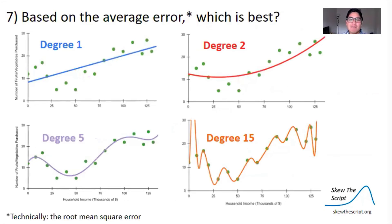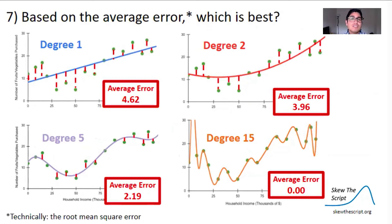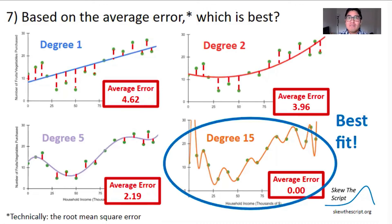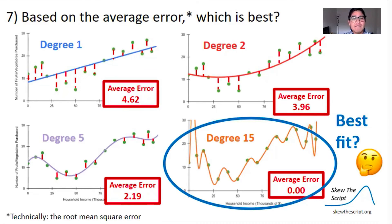Let's consider the average or typical error in each model. Here are all the errors illustrated with red dotted lines. The degree-15 polynomial has an average error of zero, meaning it hits every point exactly. It sort of seems like the best fit — but is it? Remember that we removed some data points at the beginning of the process to create a test set.